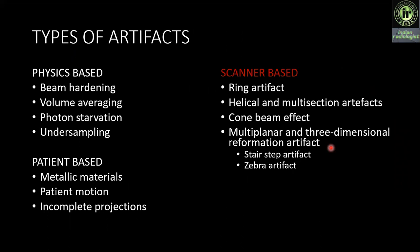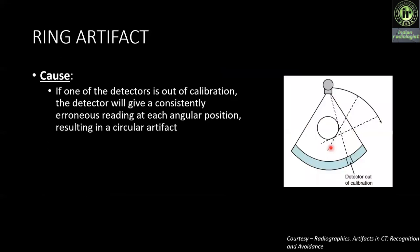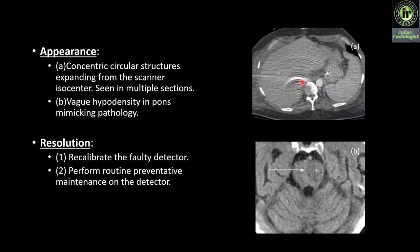Now coming to scanner-based artifacts, which include ring artifacts, helical and multi-section artifacts, cone beam effect, and multi-planar and three-dimensional reformation artifacts including staircase and zebra artifacts. First is ring artifacts: if one of the detectors is out of calibration, the detector will consistently give an erroneous reading at each angular position resulting in a circular artifact. Here we see concentric circular structures expanding from the scanner isocenter, which may sometimes appear as a weak hyperdensity mimicking pathology. Correction: recalibrate the faulty detector and perform routine preventive maintenance.